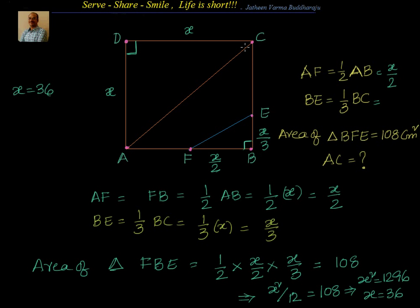So we got X equal to 36. AB equal to BC equal to CD equal to DA equal to 36. Now what is AC? AC is nothing but equal to Pythagorean theorem. If we apply, we have AC square equal to AD square plus DC square. AD square is X square and DC square is also X square. That's equal to 2X square.